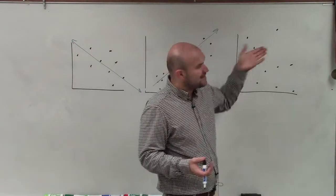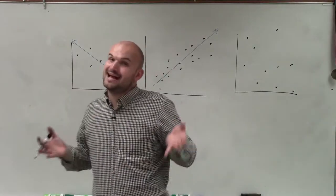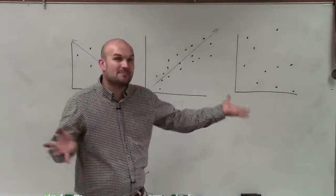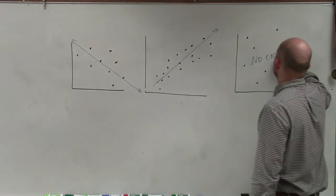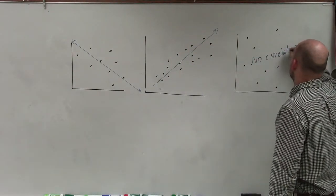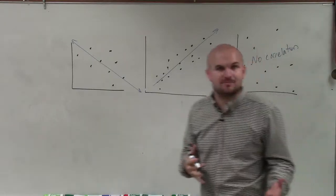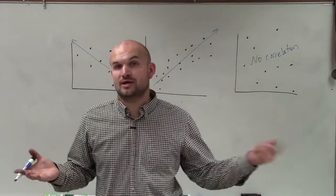However, when you have a scatterplot that does not have any correlation, then we cannot draw a best fit line, because this one has no correlation. There's really no pattern we can follow with the best fit line to draw one. So therefore, we'll just say no correlation.